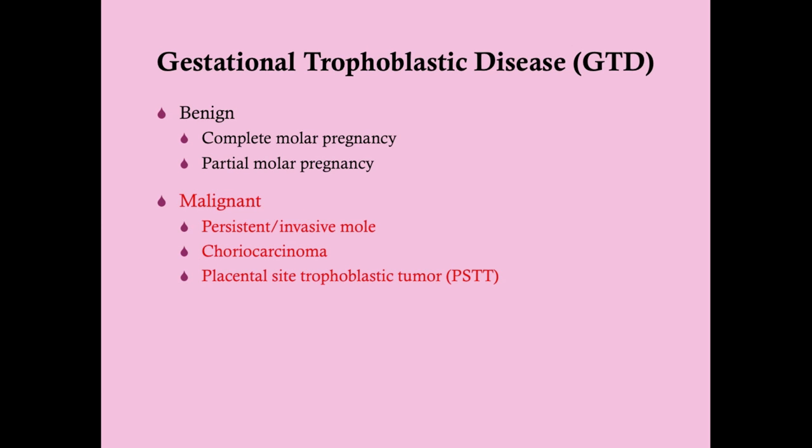We are back again talking about gestational trophoblastic disease. We're going to talk now about the malignant forms of GTD, which generally come after the benign GTD — the molar pregnancy. This is also called gestational trophoblastic neoplasia, indicating that this is more of a tumor, like a cancer, rather than a benign process. We're going to talk about the persistent or invasive mole, choriocarcinoma, and the placental site trophoblastic tumor, which is pretty rare.